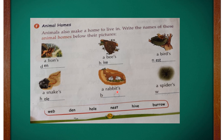The next one is a rabbit — the rabbit's home is called a burrow, B-U-R-R-O-W, burrow. And the next picture is a spider — the spider's home is called a web, W-E-B, web. So with this we are completing this exercise.